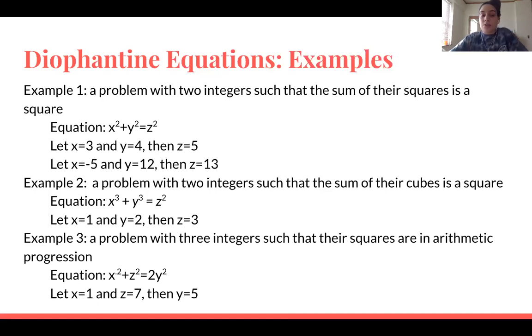And then the last problem example is a problem with three integers such that their squares are in arithmetic progression. So that equation would look like x squared plus z squared equals 2y squared. And now let's suppose x equals 1 and z equals 7. So then after solving all that algebraically, we get y equals 5.